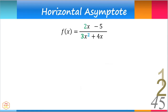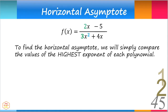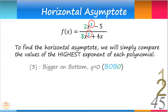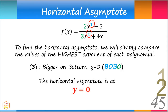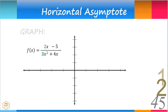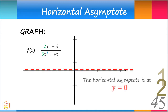Let's look at another rational function. To find its horizontal asymptote, we compare the values of the highest exponent of each polynomial. In the numerator, the highest exponent is 1, and in the denominator, it is 2. Notice that the exponents are bigger on the bottom. This means the horizontal asymptote is y equals 0. The curve runs closer and closer to the horizontal line y equals 0 but will never intersect nor touch it.